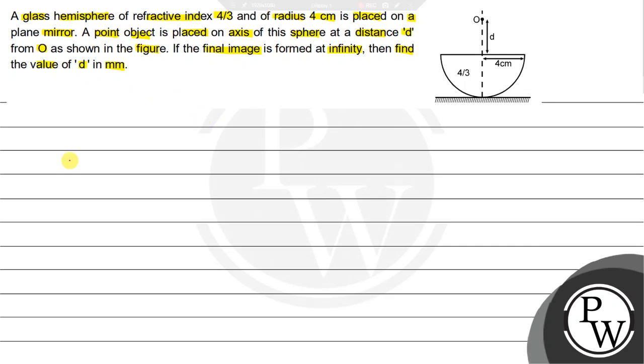Let us solve this question. Here we have to see the concept which will easily solve this question. Image formed by one lens can act as an object for another. This is our concept.